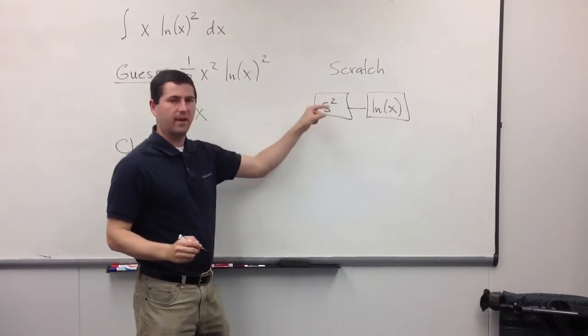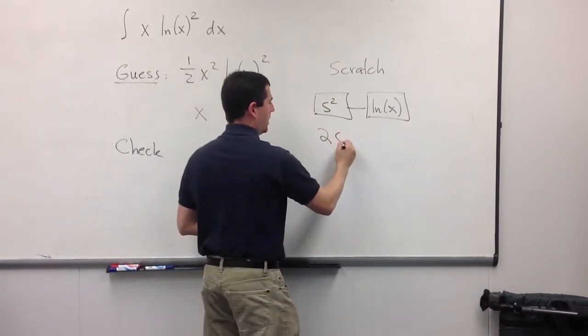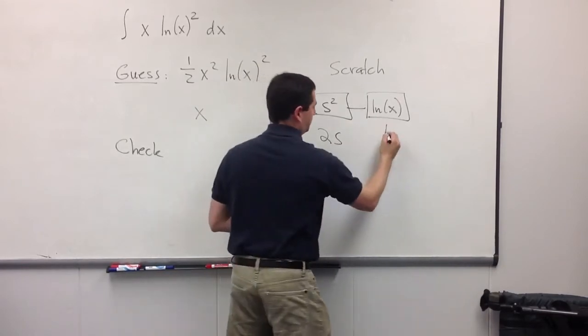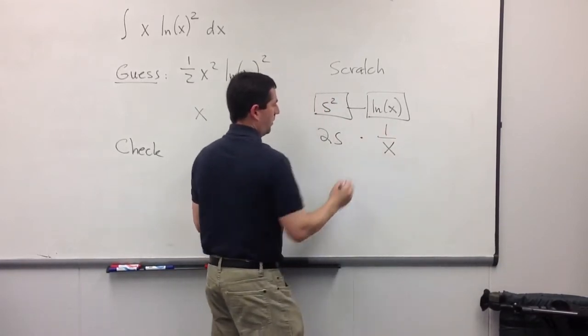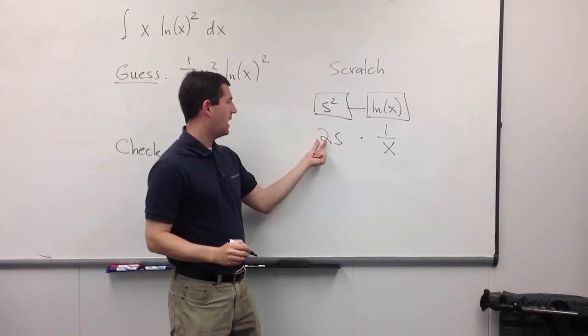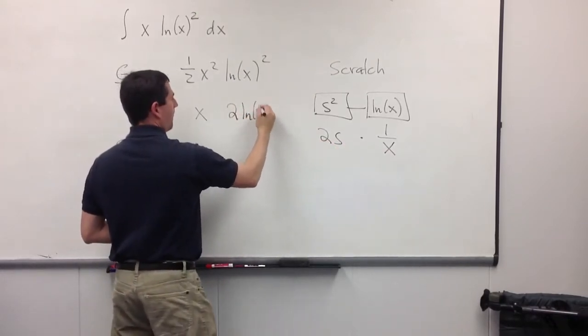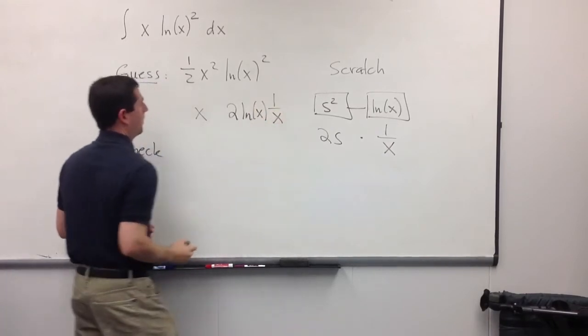Okay. So, I take the derivative of s squared, I get 2s. The derivative of ln of x is one over x. So, if I put these together, it will be twice ln of x times one over x.